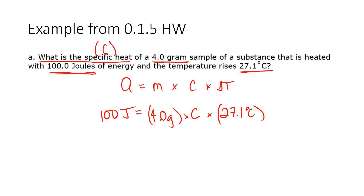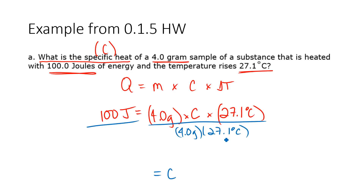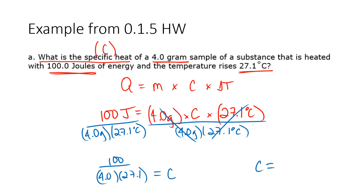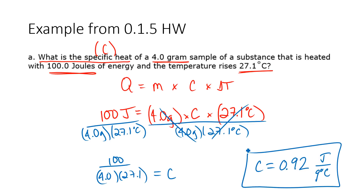I know three of my four variables, so I'm going to rearrange to solve for C. Right now C is being multiplied by 4 and 27. I want to get C by itself. You might remember from algebra, if you want to get rid of something you do the opposite. So if I'm multiplying by 27 and 4, I divide both sides by those values. So C equals 100 divided by 4 times 27.1. Plugging this into my calculator: 100 divided by 4 divided by 27.1 gives me a specific heat of 0.92. You can use this equation to solve for Q, mass, specific heat, or temperature change depending on what you are given.